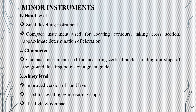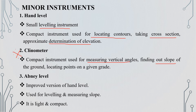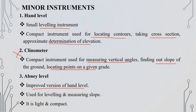The next section covers minor instruments. The first is the hand level, which is a small leveling instrument. The Abney level is an improved version of the hand level, and is light and compact.